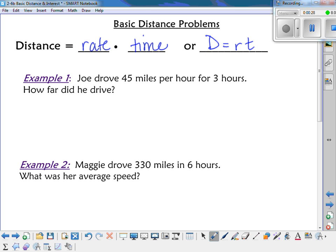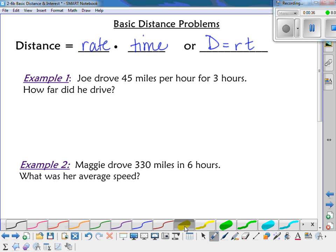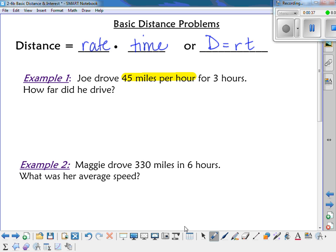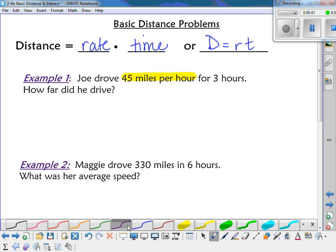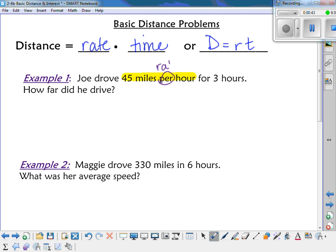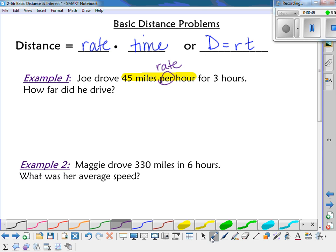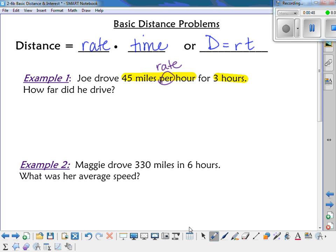So for example one, Joe drove 45 miles per hour for three hours. You have to figure out what did they give you. They gave you 45 miles per hour. When it's something per something else, when you see the word per, that's a hint that this is a rate. And then three hours, what is that? That's time.